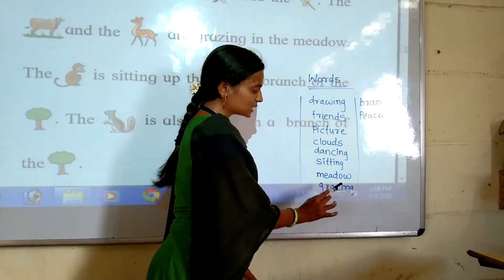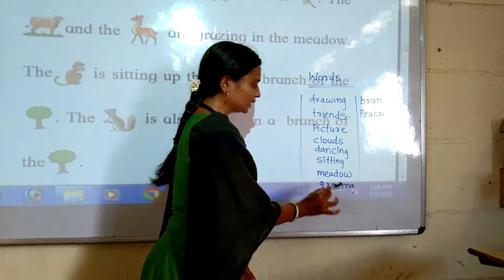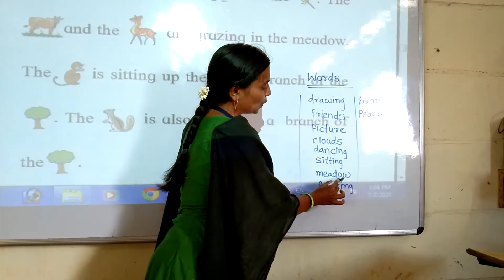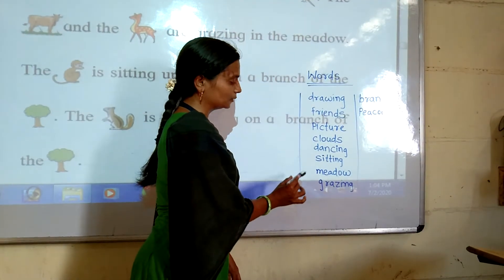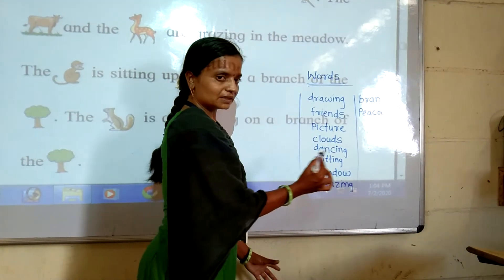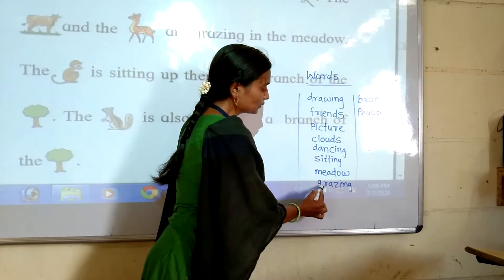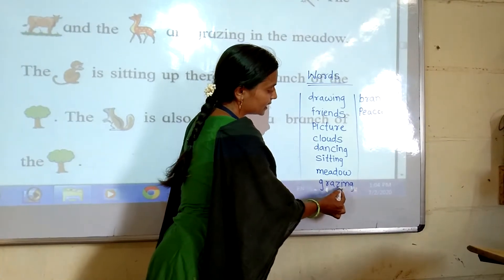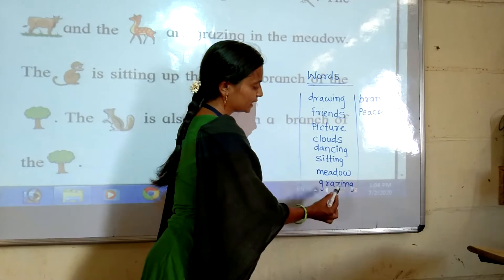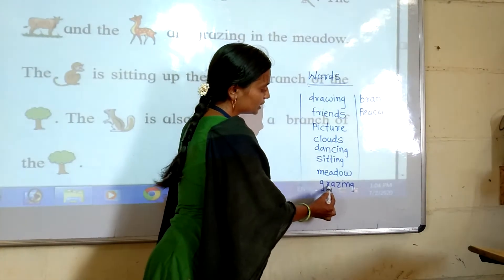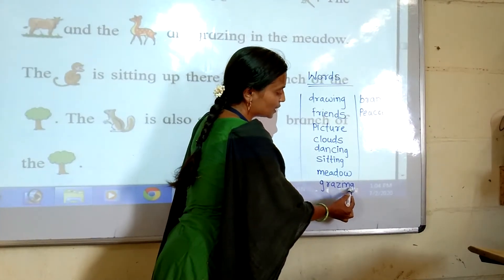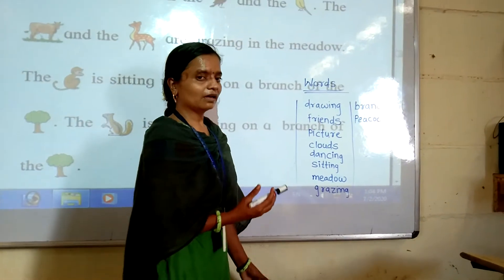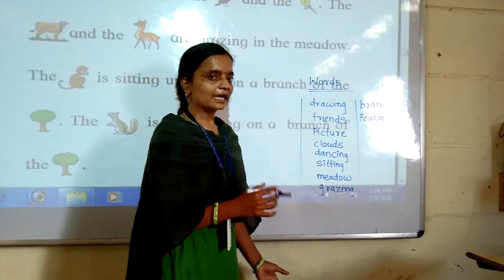S-I-T-T-I-N-G. Sitting means Bussling. M-E-A-D-O-W. Meadow means Kuran. G-R-A-Z-I-N-G. Grazing means Tswarani — meaning the cows are eating grass.